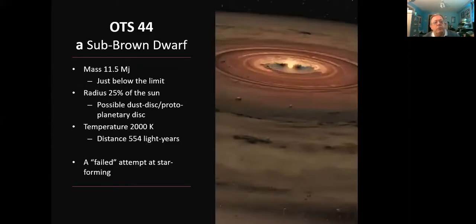And OTS 44 is a sub brown dwarf, quite a large one. It's 11.5 times the mass of Jupiter. So just below that brown dwarf limit. And it's quite big, 25% the radius of the Sun. So it might well be that it has a dust disk or proto planetary disk in the process of forming still. And quite warm with a temperature of 2000 degrees. So this is either a brown dwarf with a dust ring around it or potentially a proto star that has not yet reached the density to kick off nuclear fusion. So it's either a failed star or it hasn't really had time yet.